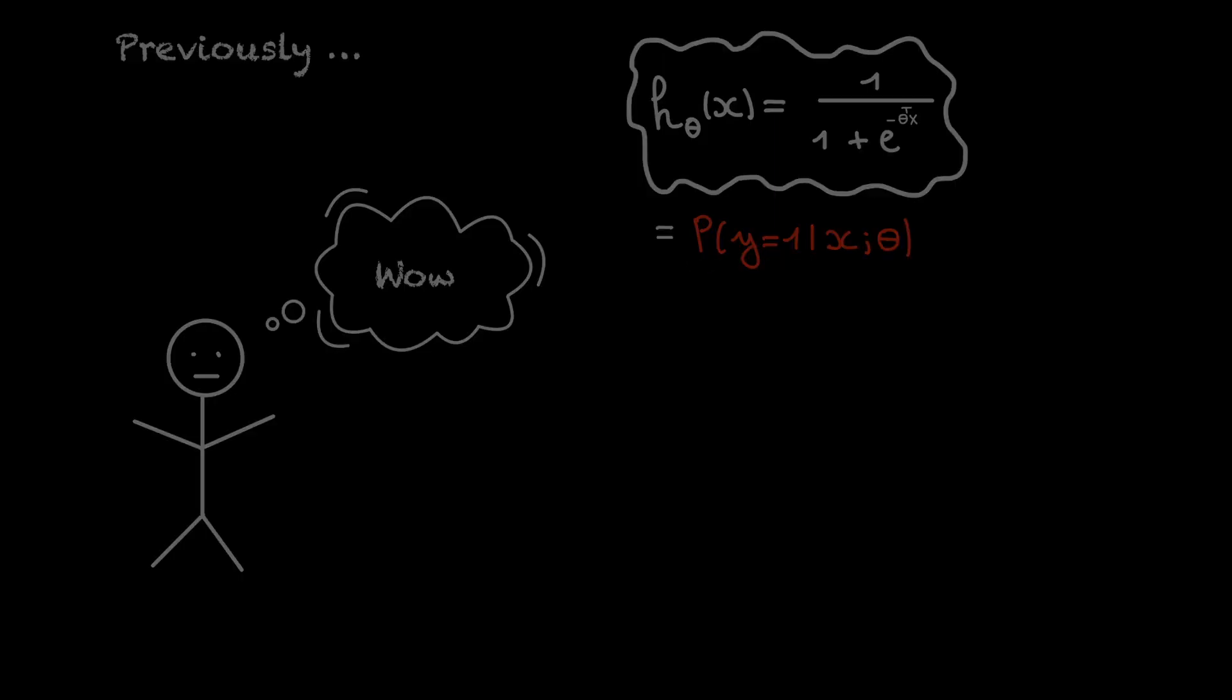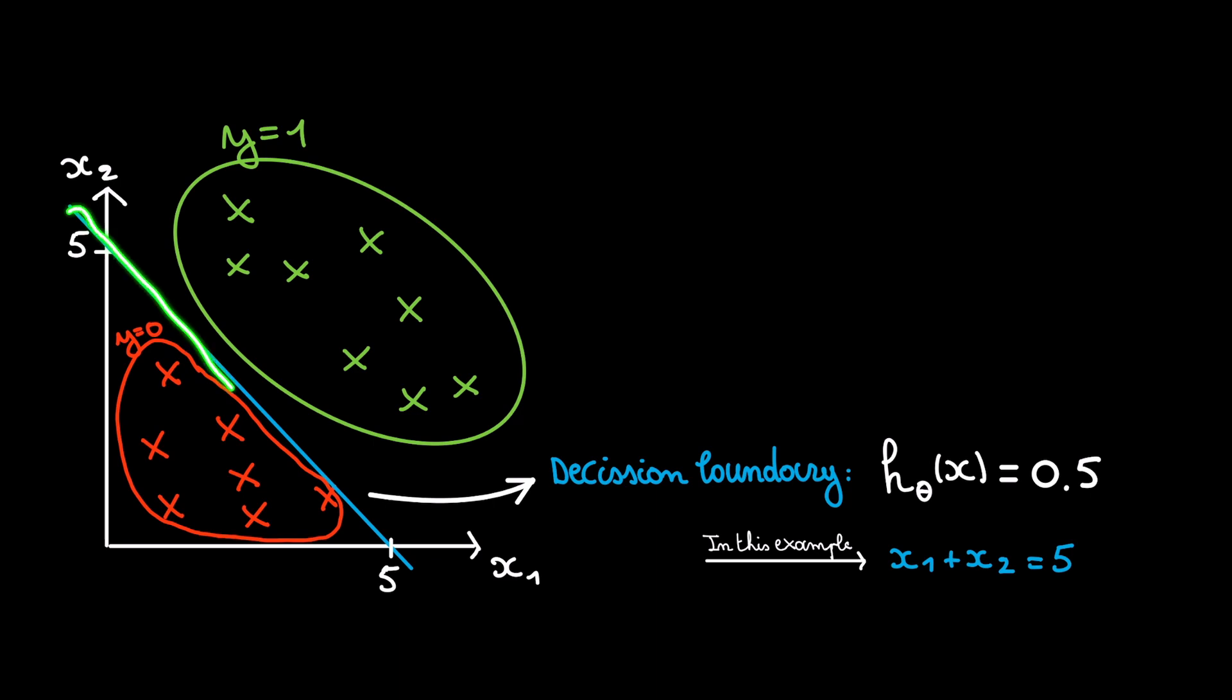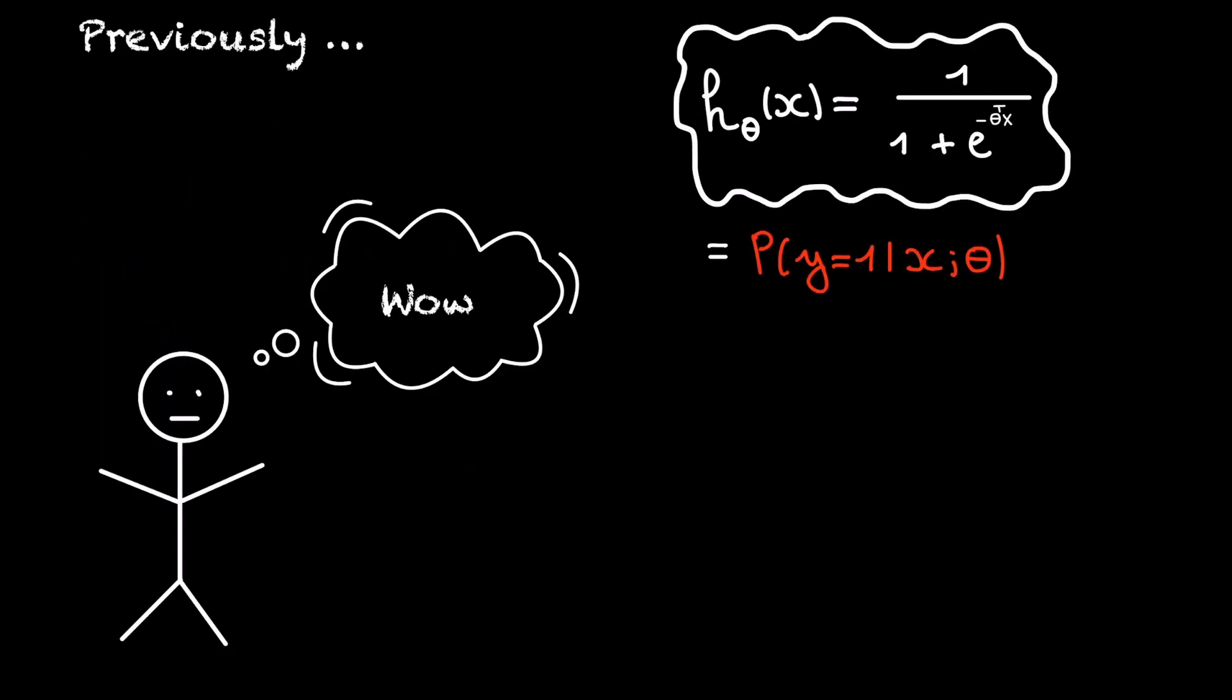We've also seen that we get a decision boundary if we plot all the points where our hypothesis is equal to 0.5. But there is one thing we haven't seen yet.